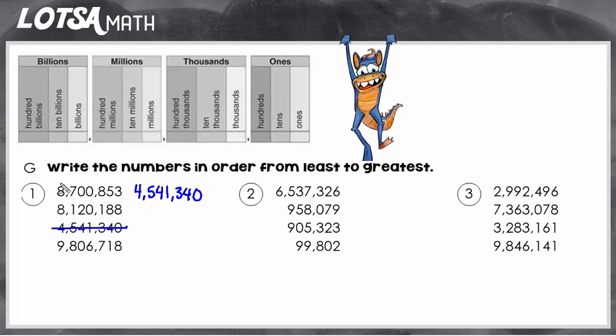I'm going to mark off the eights since they're tied in that place value, and I'm going to look at the hundred thousands place. So out of seven and one, which one's least? The one. That means 8,120,000 is going to be less than 8,700,000. So I'm going to write that one next: 8,120,188.